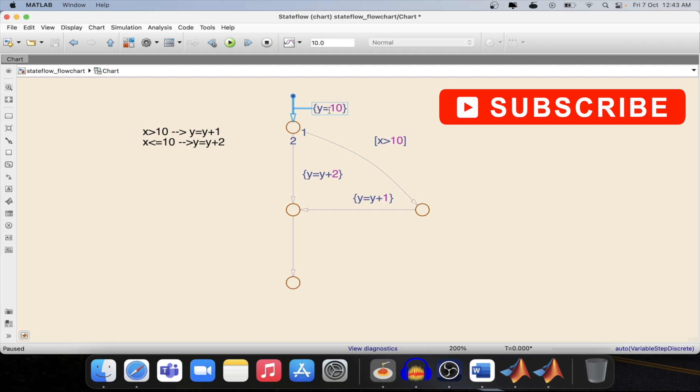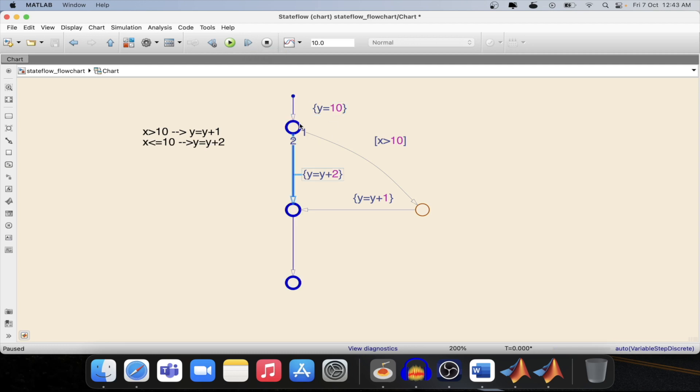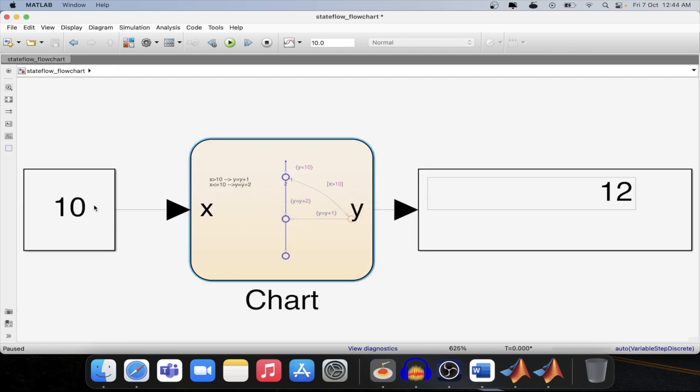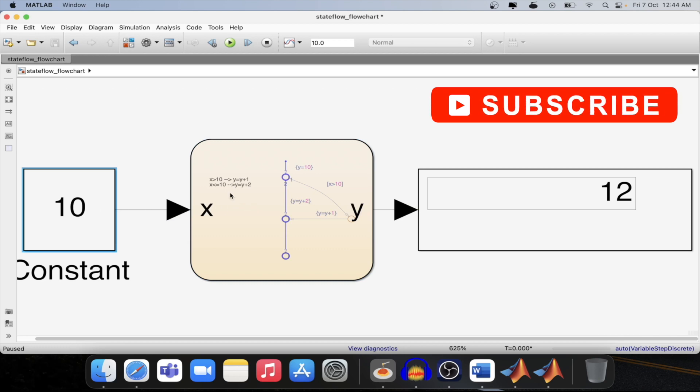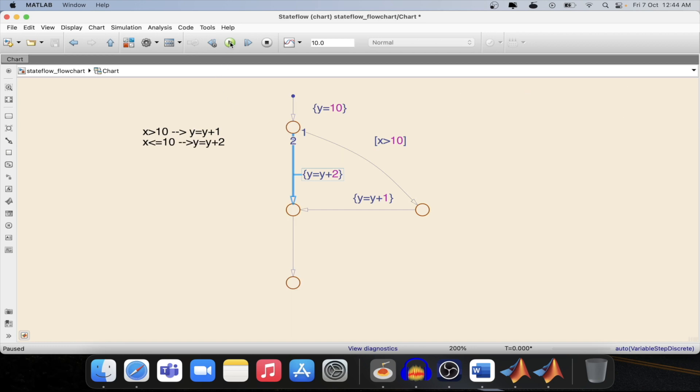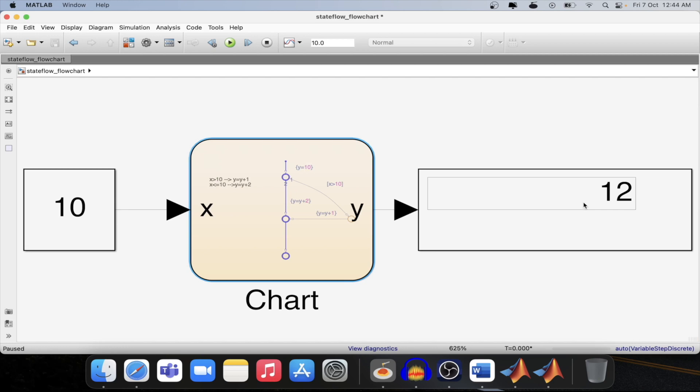The value of y is 10 in this case. And the value of y will follow the path that is mentioned over here. So the execution will follow the path which is satisfying the current condition. As we are already able to see, over here we have given an input of 10 which is satisfying the second condition. So that's why the transition happened for the second condition that is there over in the flowchart. And it has added 2 to the output and we are getting 12 as the output.